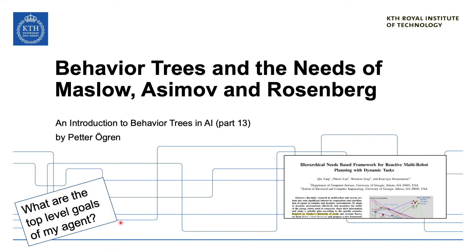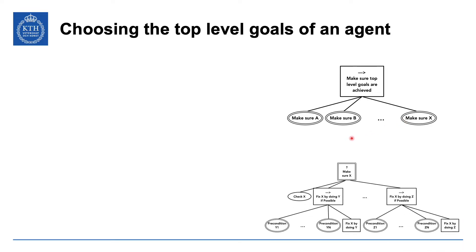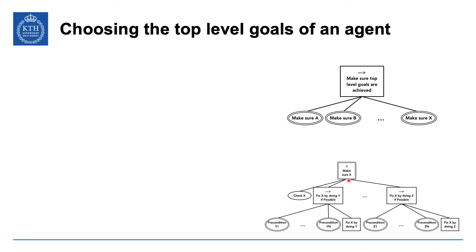The question we're going to look at is: what are the top-level goals of my agent? What is my agent actually trying to achieve in this world? If all the top-level goals are achieved, the agent is happy. Remember in the backchain design, we pick a number of top-level goals, and if we achieve all of those we're happy. Then we look at ways of achieving those goals — first we check if X is satisfied, and if not we try to fix it by doing Y or Z. There are preconditions that lead to new things to check and fix, and we can recursively build a BT achieving our top-level goals.